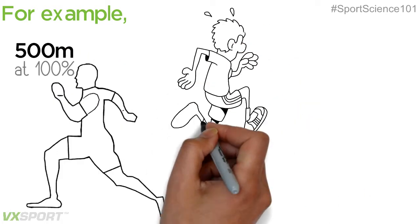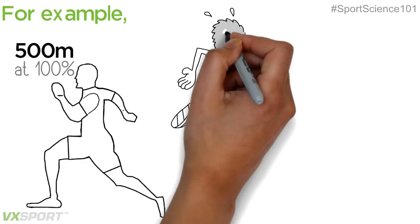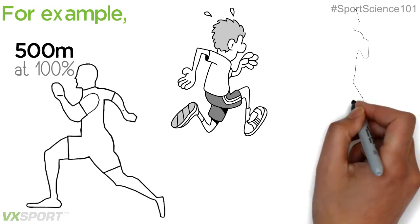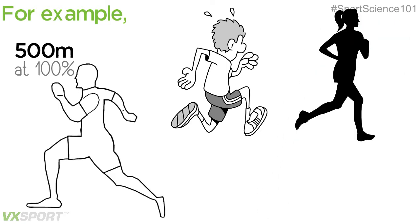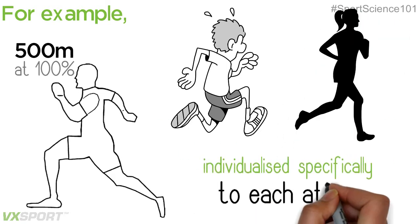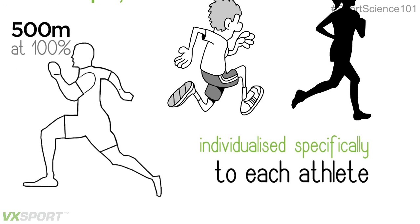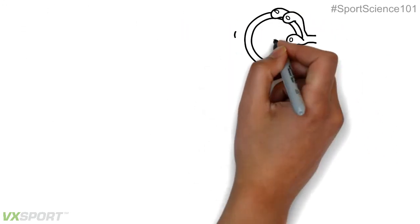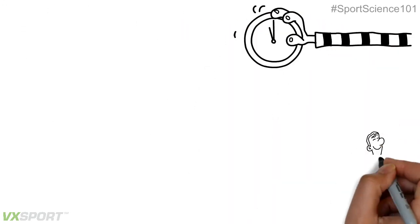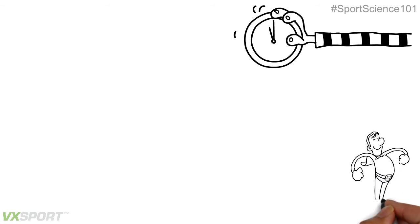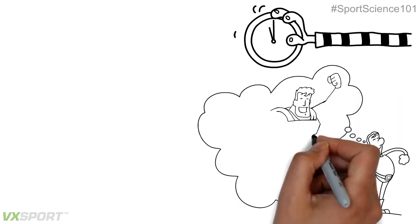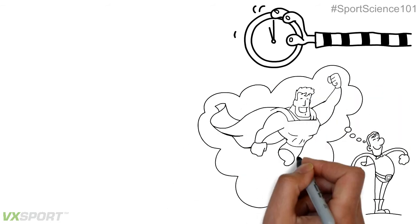This would mean that all athletes are set the same distance target. However, the speed threshold will be individualized specifically to each athlete. Spending time around and above an athlete's MAS allows us to target aerobic power and anaerobic energy contributions.